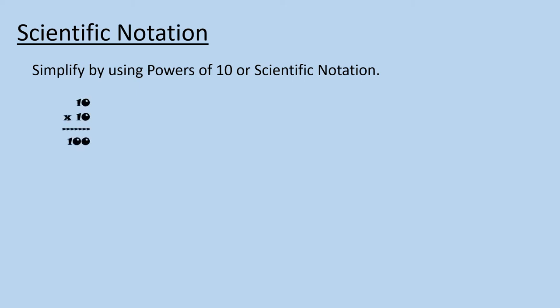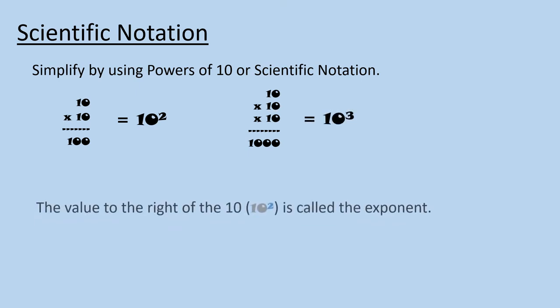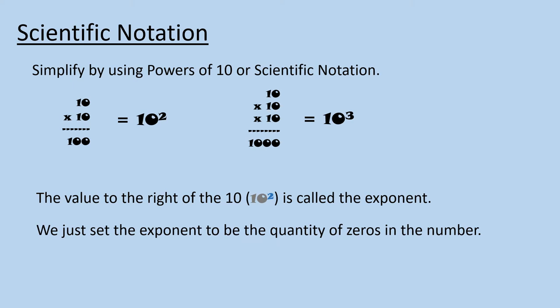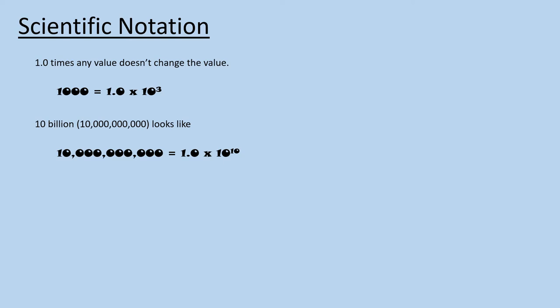We know 100 is really 10 times 10 and that 1000 is really 10 times 10 times 10. So we could write 100 as 10 squared or 10 times itself. 1000 then would be 10 times itself three times or 10 cubed. We call the value to the right of the 10, the exponent. We just set the exponent to be the quantity of zeros in the number. Further, we know that one times any value doesn't change that value. One times five is still five. With this in mind, we can express 1000 as 1.0 times 10 cubed. Thus, 10 billion, that's a one with 10 zeros behind it, would look like 1.0 times 10 to the 10th. Easier to handle. And we can use those powers of 10 to determine the relative differences in values as we shall see later.